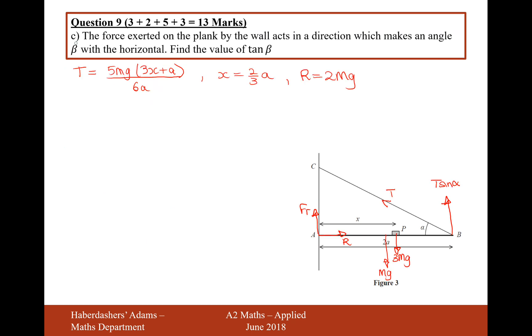Okay, moving on to part C. The force exerted on the plank by the wall acts in a direction that makes an angle beta with the horizontal. Find the value of tan beta. Now, what they're referring to here, the force exerted on the plank by the wall, so that's this force here, the combination of R and friction. So, if we draw a little, if we think of this as point A, and I have R this way and friction up this way, so just moving the friction over to this side now, then we're working out this value here, beta, or tan beta.